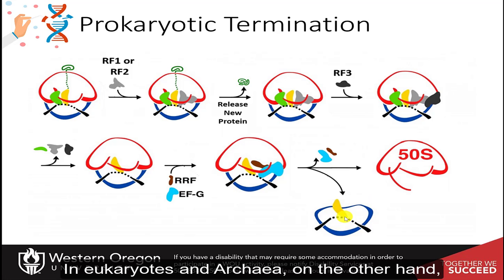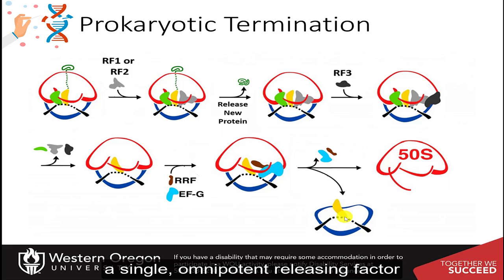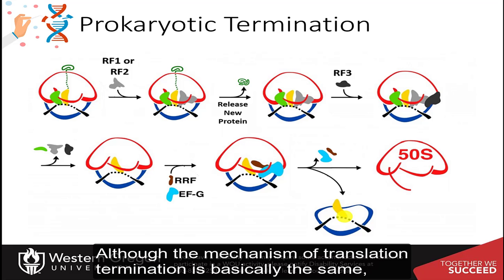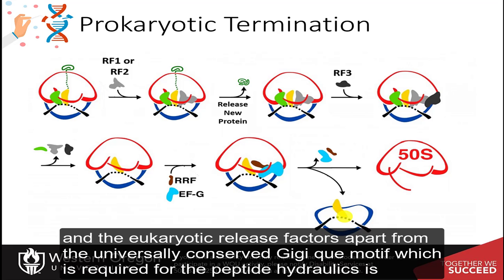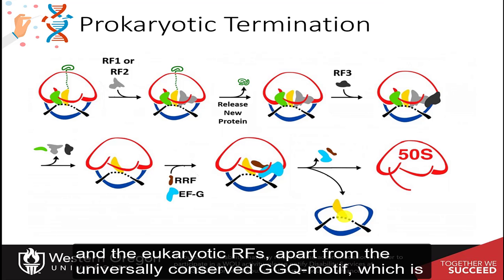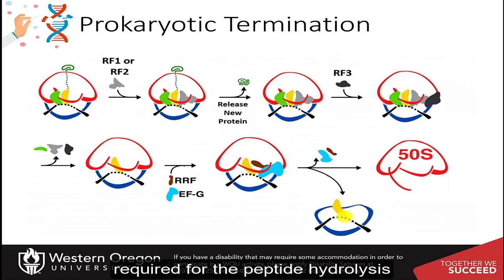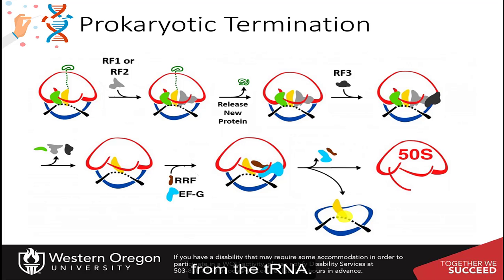In eukaryotes and archaea, on the other hand, a single omnipotent releasing factor reads all three stop codons. Although the mechanism of translation termination is basically the same, there is neither sequence nor structural homology between the bacterial release factors and the eukaryotic release factors, apart from the universally conserved GGQ motif, which is required for peptide hydrolysis from the tRNA.